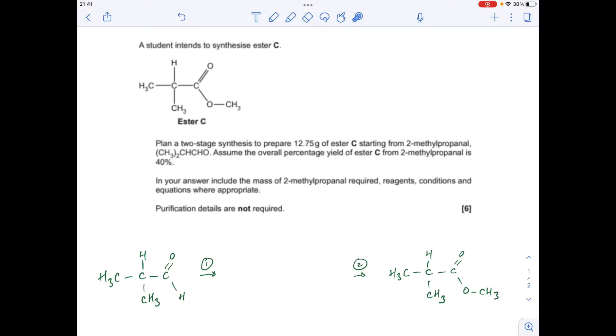We've got to come up with a two-step synthesis to go from this aldehyde here, 2-methylpropanol. Obviously you've got to turn that into something and then turn that into the ester C.